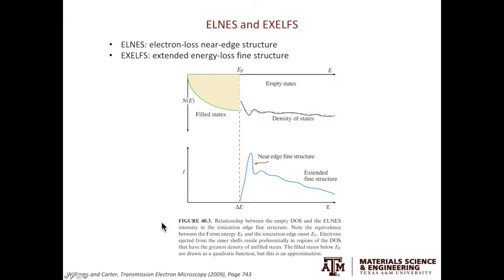There are two types of fine details. The first is called electron loss near edge structure, ELNES, and the second one is called extended energy loss fine structure, EXELFS. In the EELS spectrum, following the onset of the ionization edge, this part here is called the near edge fine structure, ELNES, and this part here is called the extended fine structure, EXELFS.